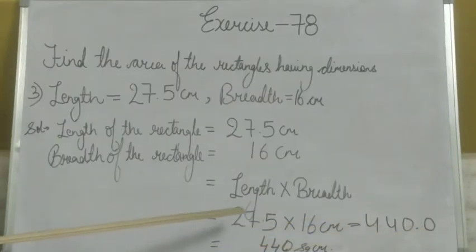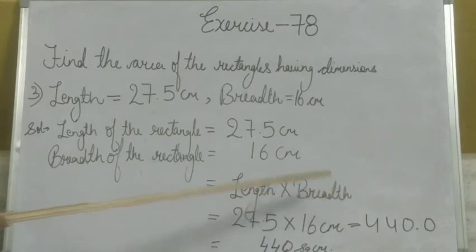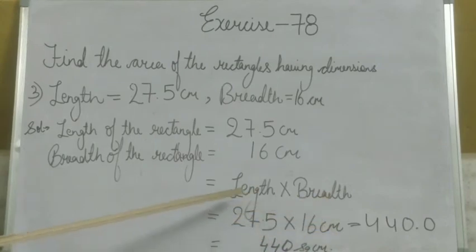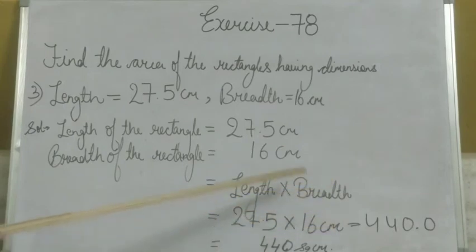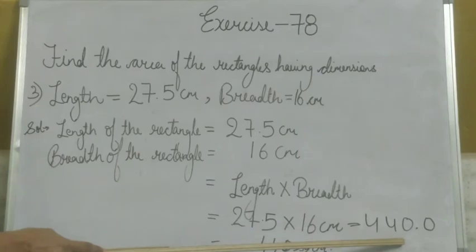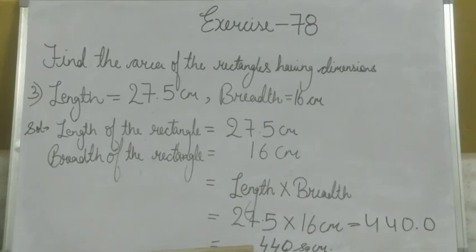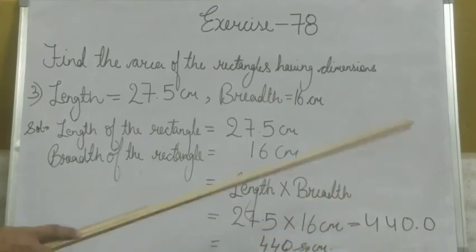Area of rectangle equals length into breadth. Length is 27.5 cm and breadth is 16 cm. When we multiply both numbers, we get 440 cm². That is the answer.